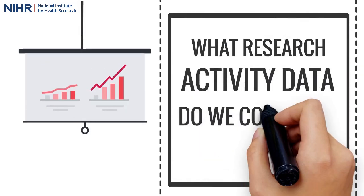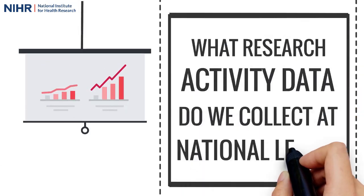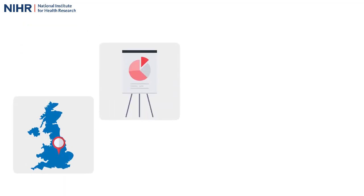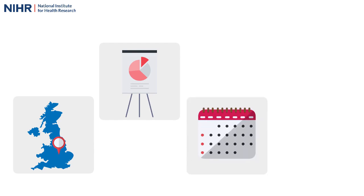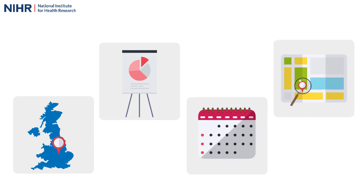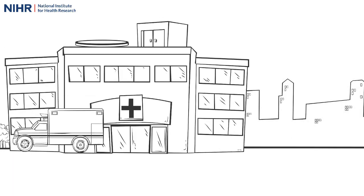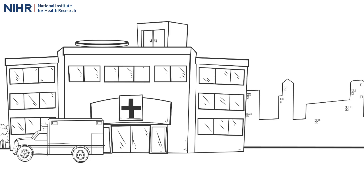In England we collect data concerning the type of activity that has taken place, the date it took place, and the site of consent. We record research activity at site level, for example at a hospital or GP surgery, as this provides us with a detailed view of the geographical coverage of research activity.